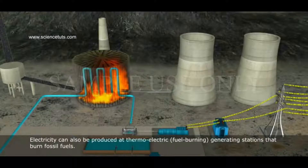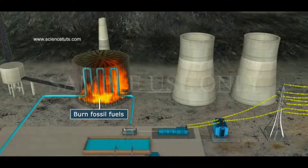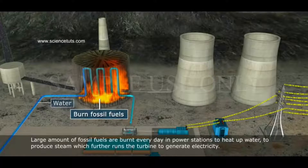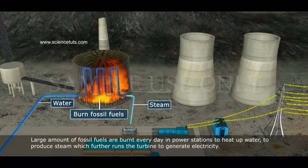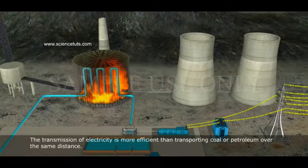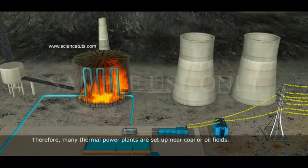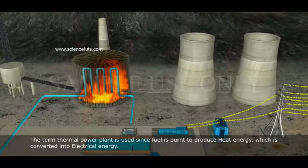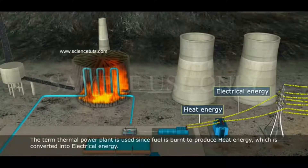Electricity can also be produced at thermoelectric fuel-burning generating stations that burn fossil fuels. Large amounts of fossil fuels are burnt every day in power stations to heat up water to produce steam, which further runs the turbine to generate electricity. The transmission of electricity is more efficient than transporting coal or petroleum over the same distance, so many thermal power plants are set up near coal or oil fields. The term thermal power plant is used since fuel is burnt to produce heat energy, which is converted into electrical energy.